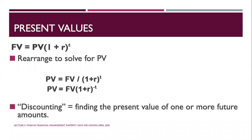Rearranging gives: PV = FV / (1 + r)^t, which can also be written as PV = FV × (1 + r)^(−t). These two expressions are the same formula written differently, and each suits a different way of entering values into a scientific calculator. Discounting is the process of finding the present value of one or more future amounts — a future value promised has a different, lower value today.